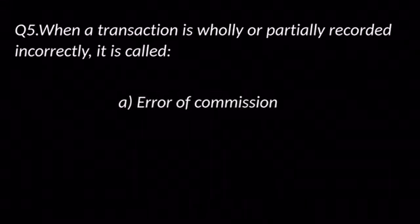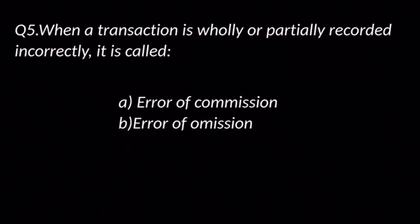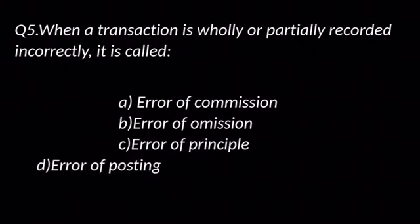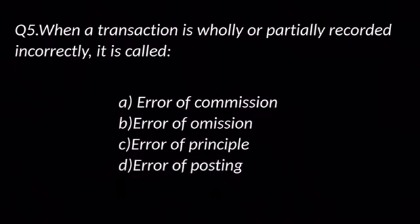Question number five: When a transaction is wholly or partially recorded incorrectly, it is called — options are: A. Error of commission, B. Error of omission, C. Error of principle, and D. Error of posting. The answer is A: Error of commission.